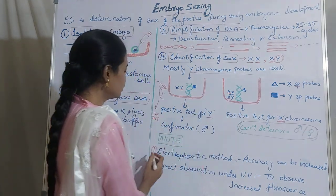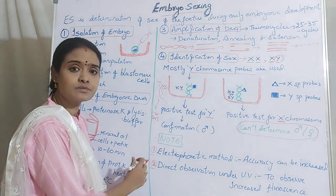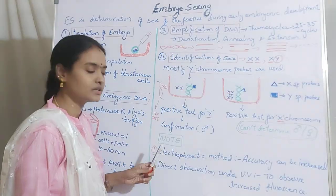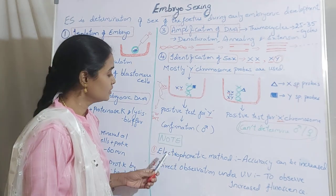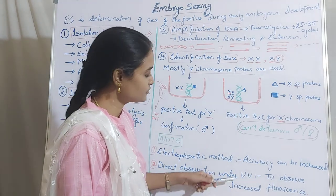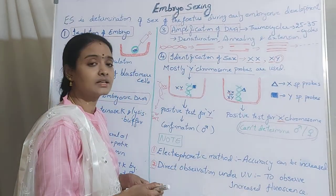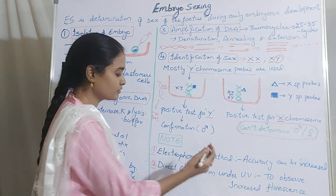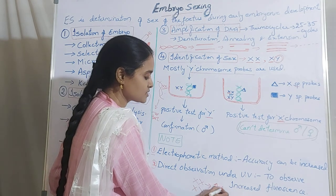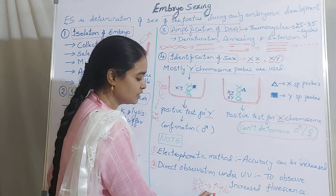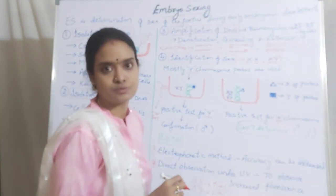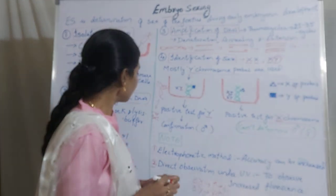After confirming with probes, you can go for the electrophoretic method for accuracy and also for direct observation using UV. As the fluorescence increases, you can say it consists of more of that particular X chromosome. If it is XY, it will have increased fluorescence when you use X specific probe, whereas decreased fluorescence indicates only X chromosome is present. By this technique you can analyze and determine the sex of that developing fetus.